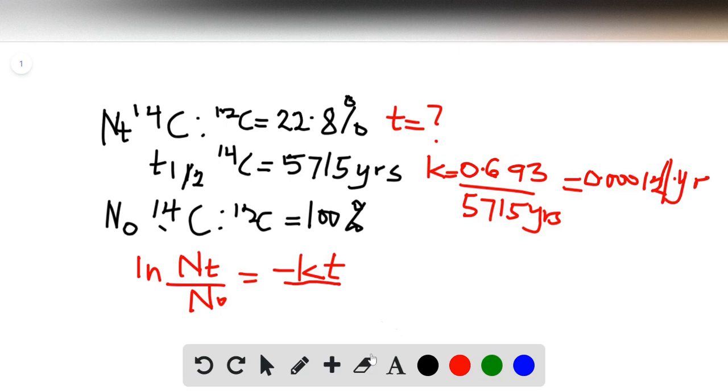Now that we have k, we can go ahead and calculate t, which will be the time it has been since this. So ln of Nₜ, which was 22.8 percent divided by 100 percent, equals negative 0.000121 per year.